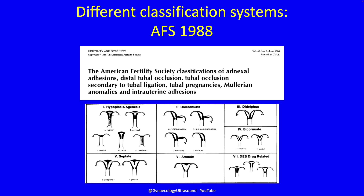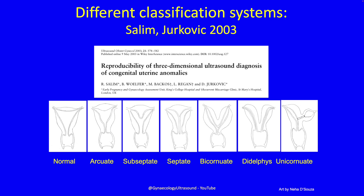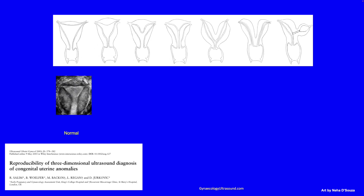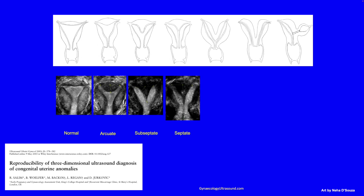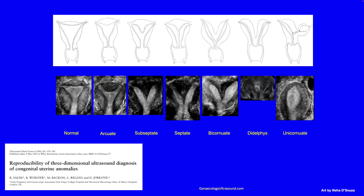Different classification systems have tried to qualify this. The oldest is from the American Fertility Society, 1988 — we don't use that one anymore. In 2013, Salim and Jurkovic published one, and this is the one I use. In this system, these are all 3D images — cartoons and actual 3D images. This is a normal shaped uterus, this one is arcuate, this one is subseptate, this one is septate, bicornuate, didelphys, and unicornuate with or without a rudimentary horn.